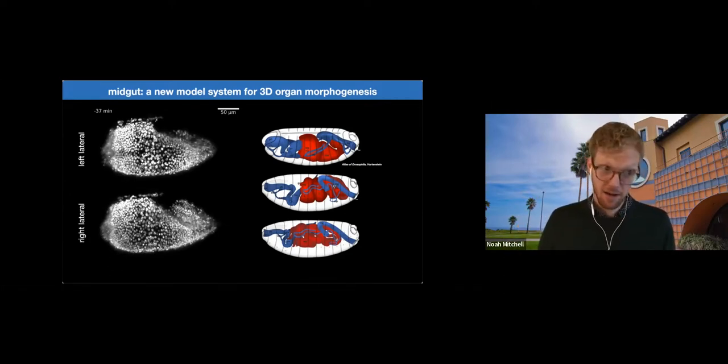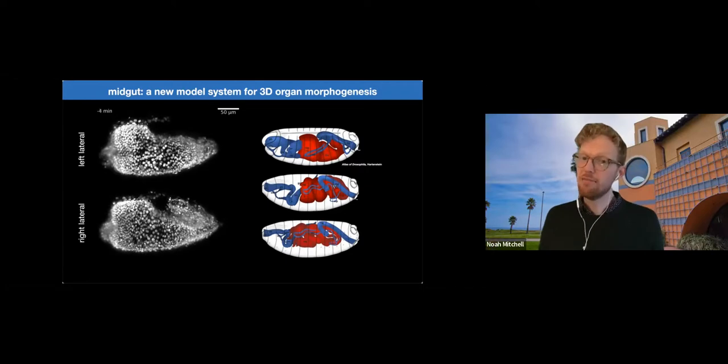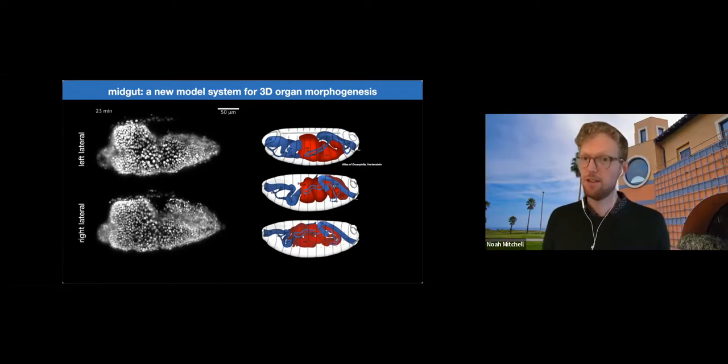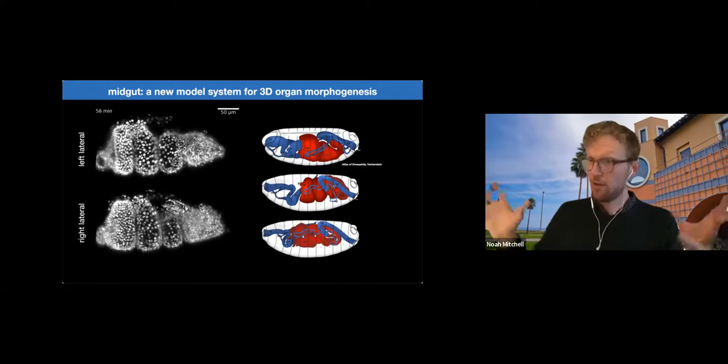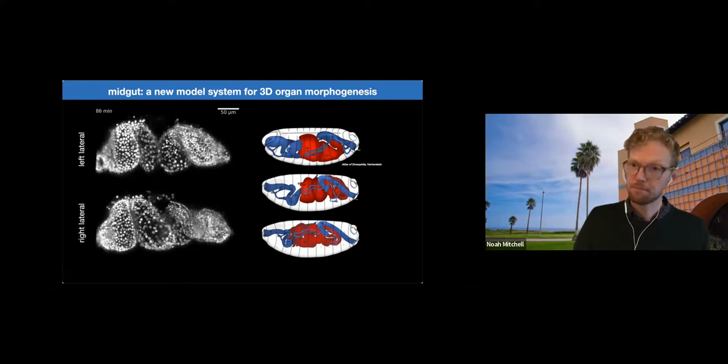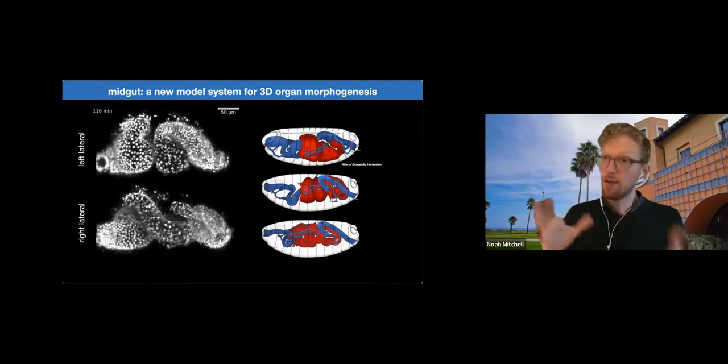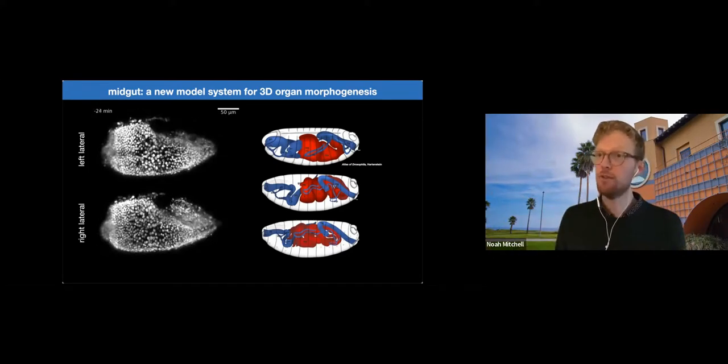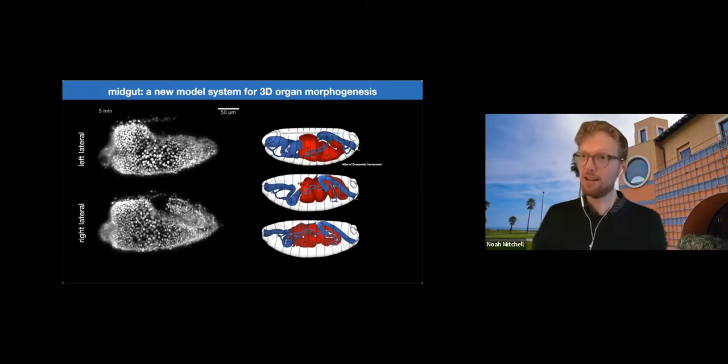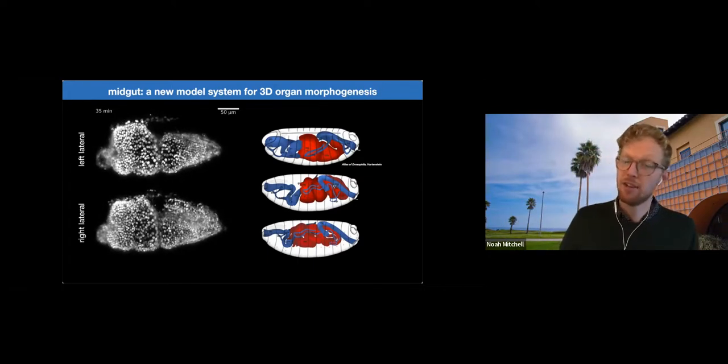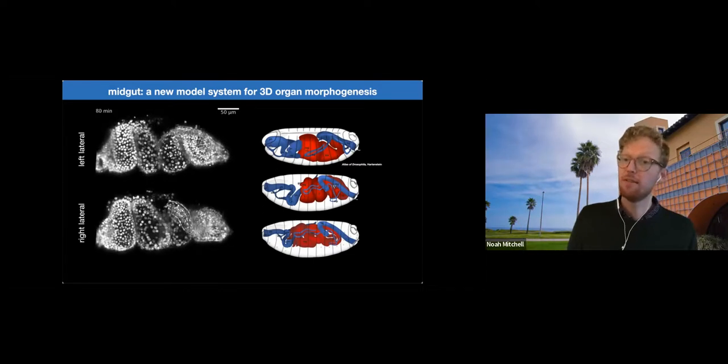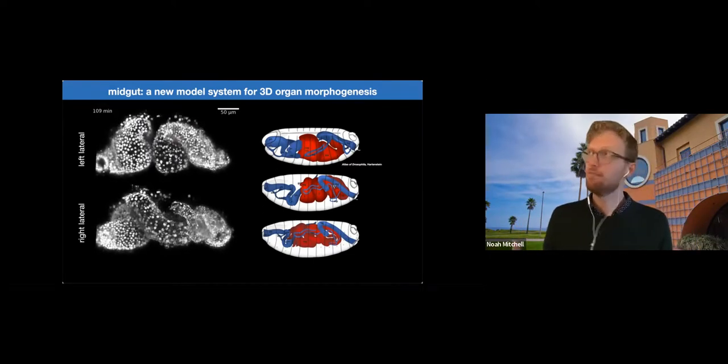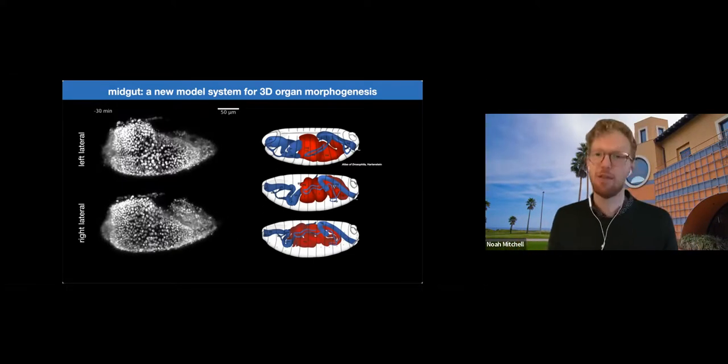So here, these are all nuclei of this multi-layer sheet of cells. And we can view the entire organ in 3D with subcellular resolution throughout the course of development. So this is the same organ. I'm just showing two different views of this panoramic data set. And so from movies such as this, we can find that there are actually no cells, no signs of cell division throughout this process.